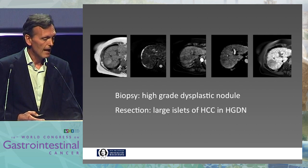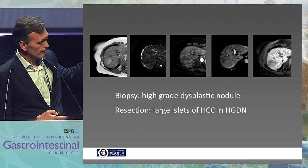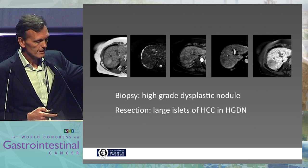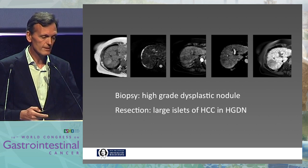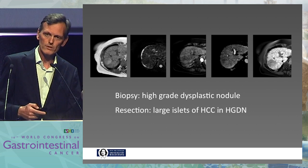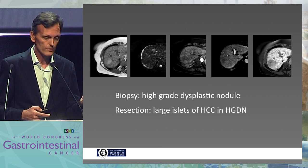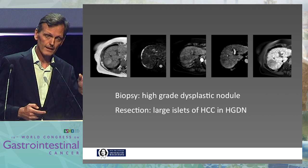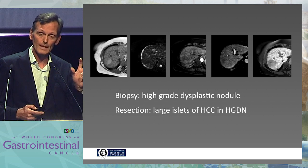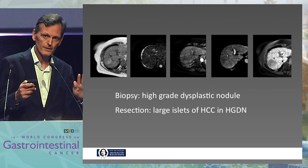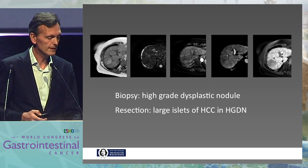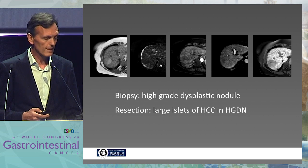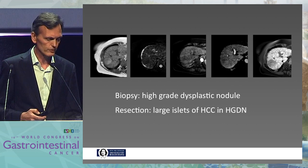Another example: up to the fourth image, this looks like a regenerative nodule. But on the last image — the hepatobiliary contrast agent image — you can see that large nodule does not express OATP and does not take up the gadozetate, at least most parts of it. This looks like a dysplastic nodule with HCC in it, with heterogeneous OATP expression. The biopsy showed high-grade dysplastic nodule. The resection revealed large foci of HCC within a high-grade dysplastic nodule.